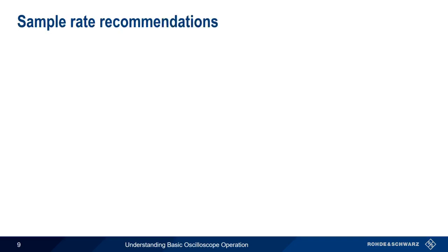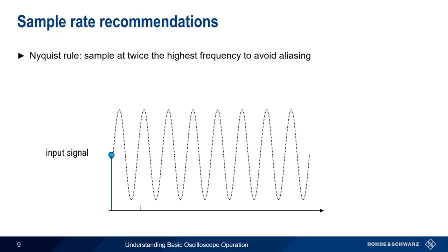So what sample rate should we choose? You may be familiar with the Nyquist rule that states that you have to sample at twice the highest frequency to avoid aliasing. If we sample our input signal too slowly, we run the risk of getting an alias signal that may look okay, but is not an accurate representation of the sampled signal.